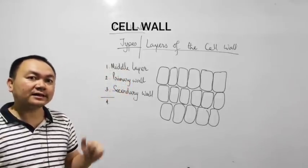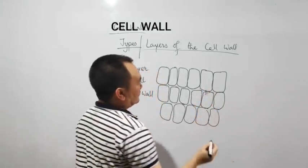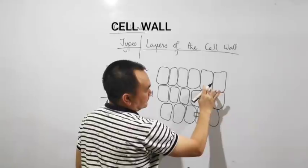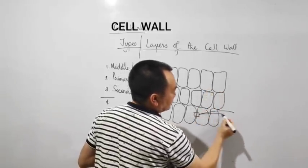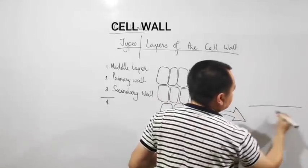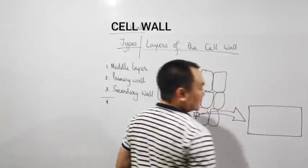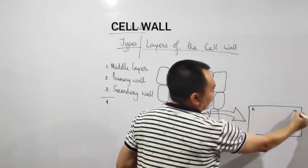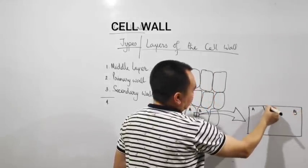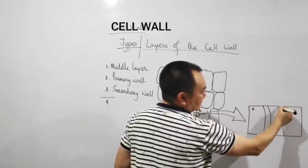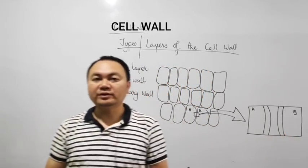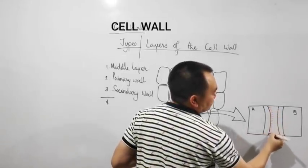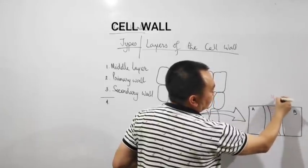Let me enlarge you this part. Now, this is cell A and this is cell B. This will be the A part, this will be the B part. This is the wall of the A, this is the wall of the B. Between A and B, there is a layer called the middle lamella.